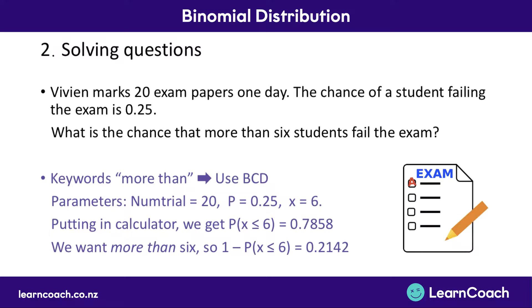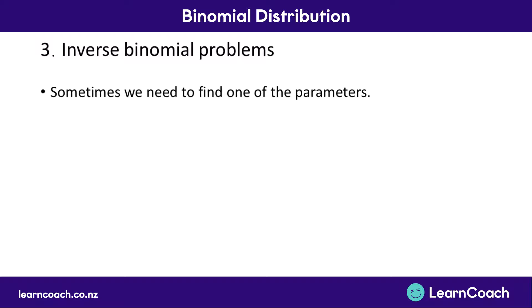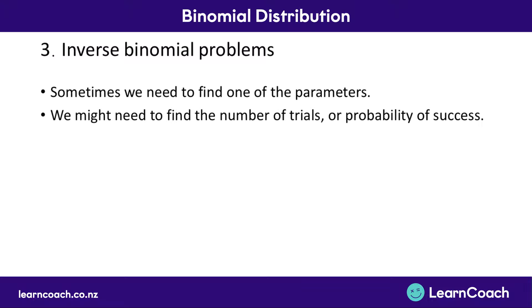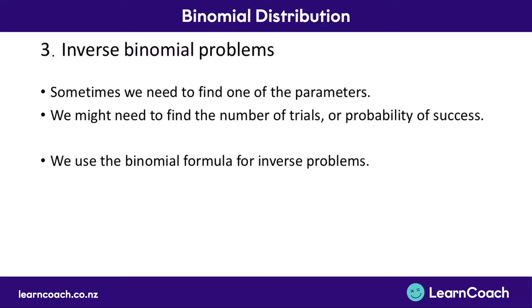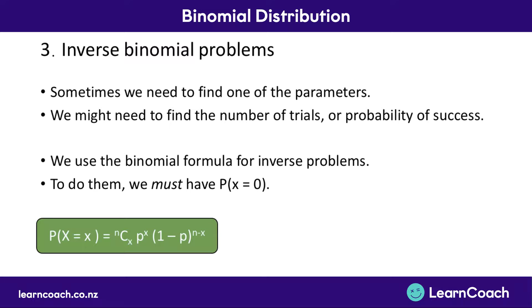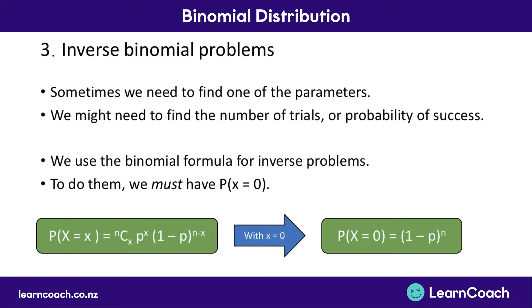Now let's move on to inverse binomial problems. Sometimes, instead of finding a probability, we actually need to find one of the parameters — we might need to find the number of trials or the probability of a success. To do this, we use the binomial formula. However, to do inverse problems, we need to have the probability of x equaling 0, meaning we need to know the probability of no successes. If we make x equal to 0, the binomial formula simplifies greatly, and we can substitute in the probability of x being 0 and solve for whatever we're looking for.